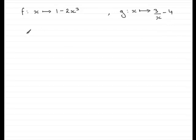So to do this, I'm going to write gf of x like this. So first of all, what we've got to do is g on f of x. So have a big bracket there, and f of x is essentially 1 minus 2x cubed.